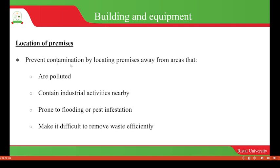This can be ensured by locating the premises away from areas that are polluted so that the food will not be contaminated by pollutants. We also have to ensure that we locate the buildings far away from areas that contain industrial activities so that waste released by these industries will not enter and contaminate the food.